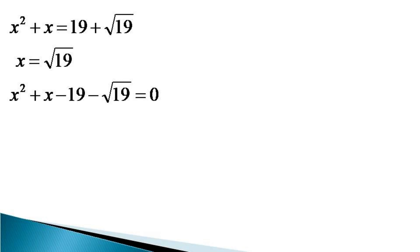We just rearrange the terms and write the equation as x square minus 19 plus x minus root 19. The second term 19 can be expressed as root 19 squared and the equation can again be written as x square minus root 19 whole square plus x minus root 19 is equal to 0.